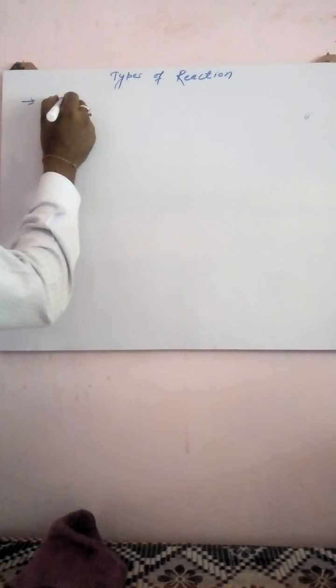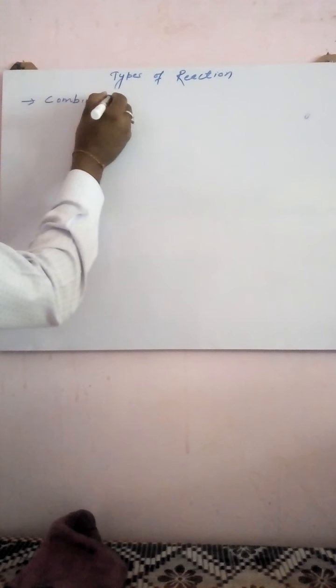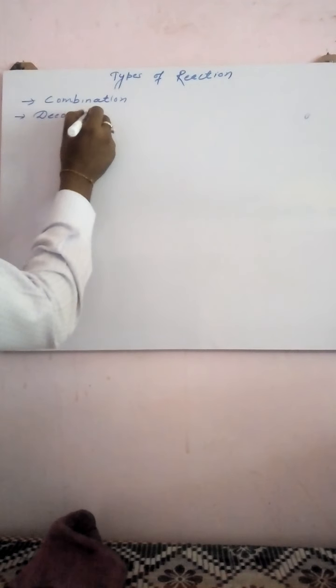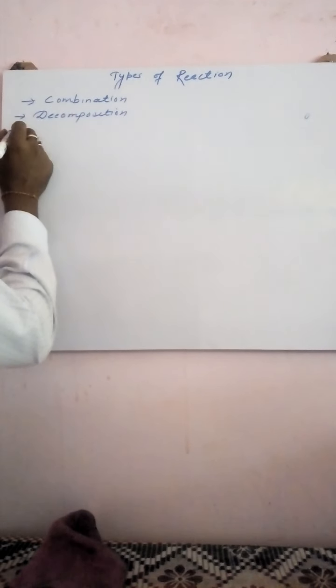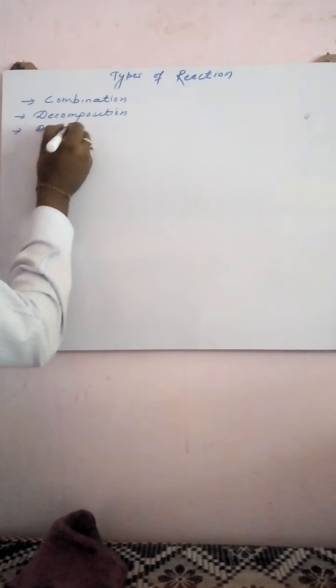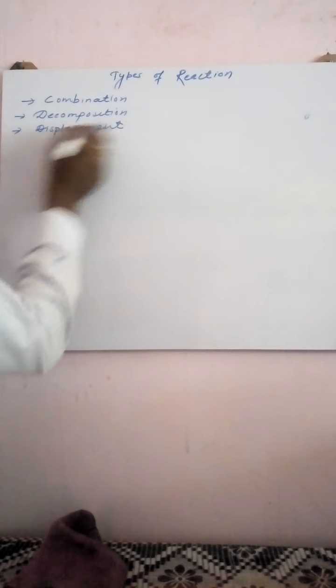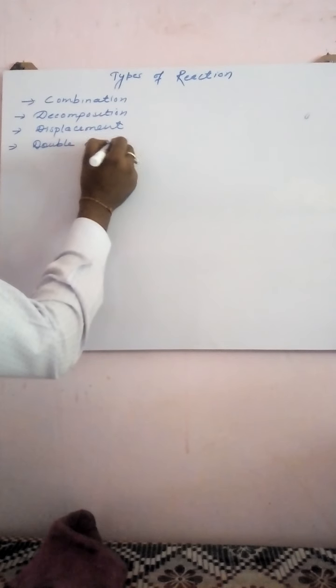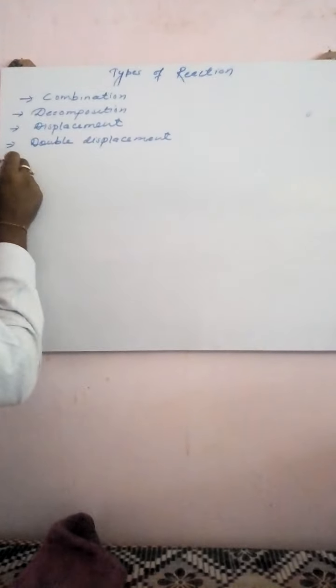Good morning, today we will discuss about types of chemical reaction. The different types are: combination reaction, decomposition reaction, displacement reaction, double displacement reaction, and redox reaction. One by one, in detail, we will understand how each reaction takes place.